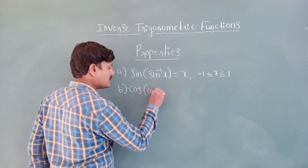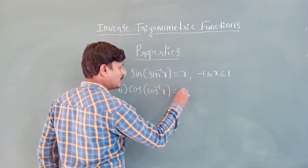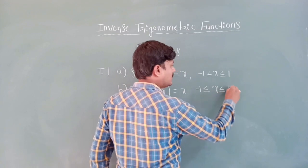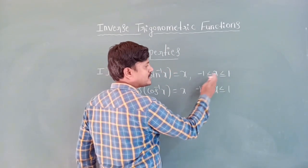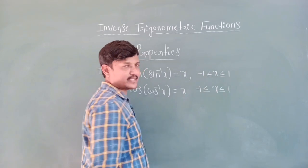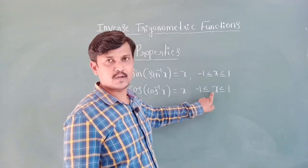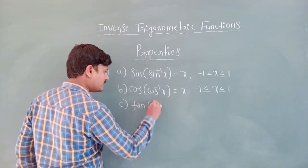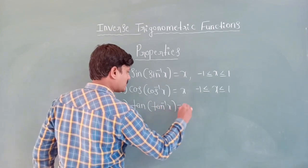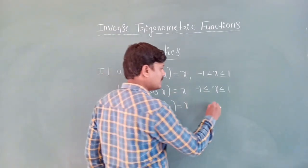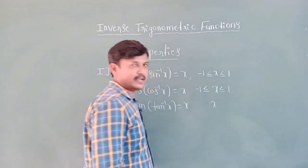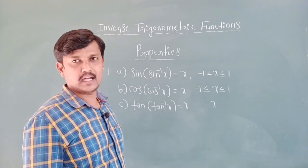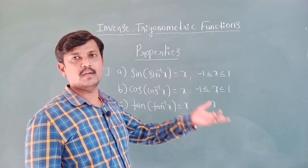Second: cos(cos⁻¹ x) = x, only when x lies between minus one and one — which is the domain of cos inverse x. Third: tan(tan⁻¹ x) = x, only when x is in the domain of tan inverse x, that is R.